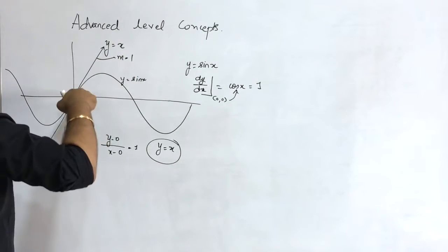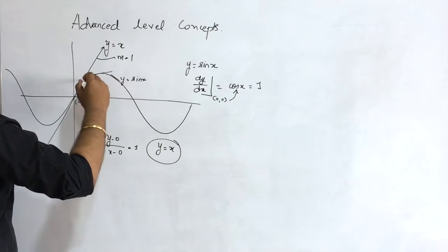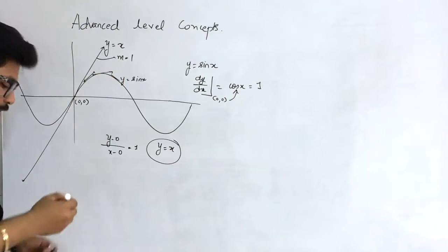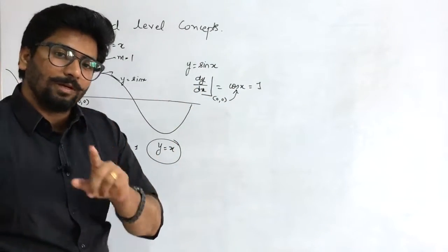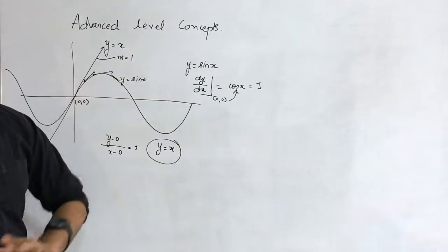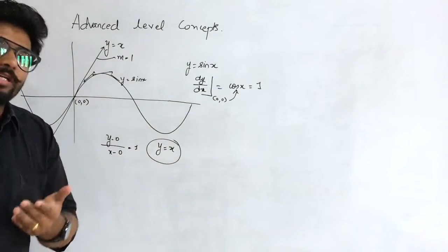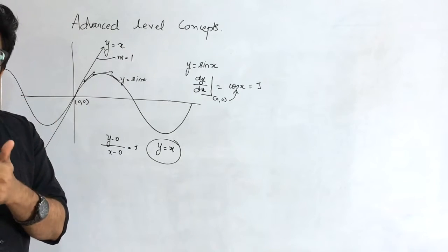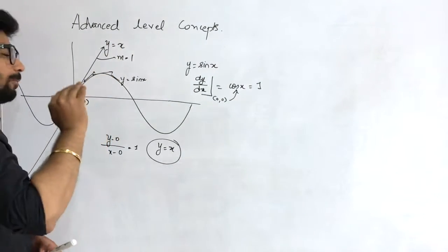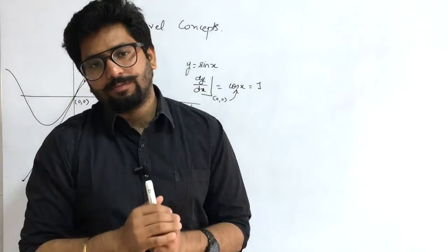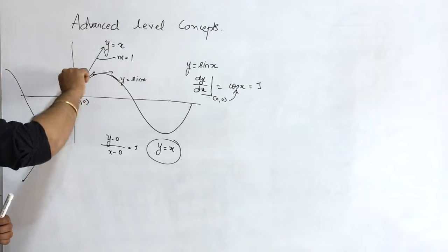Wherever you draw the tangent on the curve, the slope of that tangent will be equal to cos(x). Since the maximum value of cos is 1, at any other point the slope will be less than 1. At any point from 0 to π/2, the angle will be less than 45°. So the angle decreases, meaning the tangent line lies above the curve throughout.